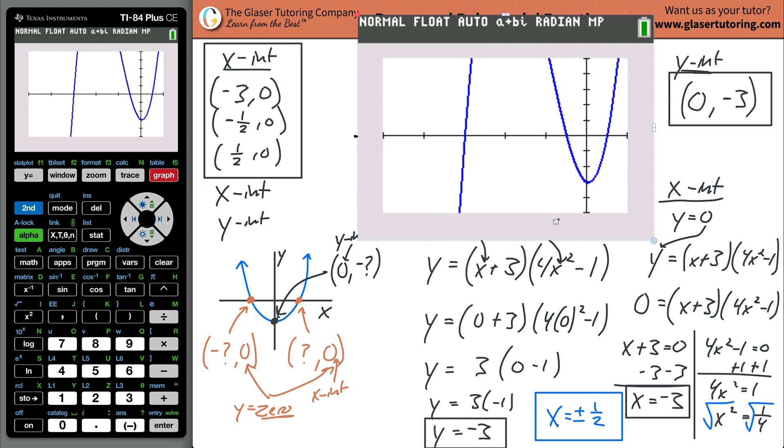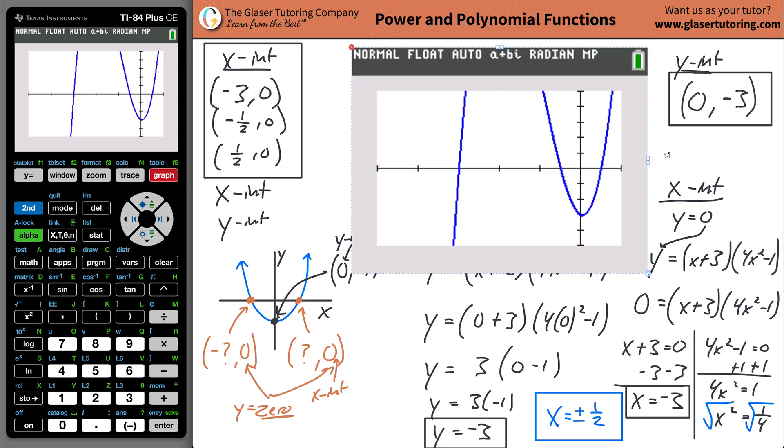This coordinate right here, (-3, 0), is right here. That's (-3, 0).